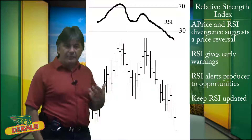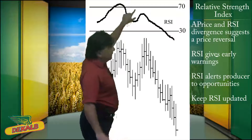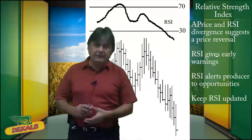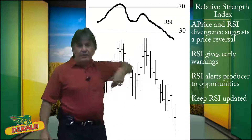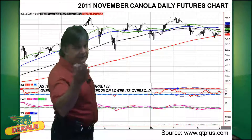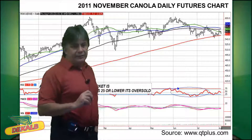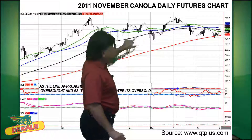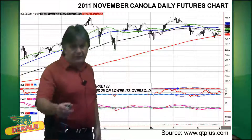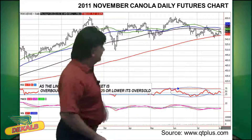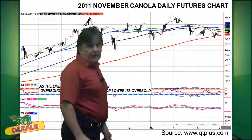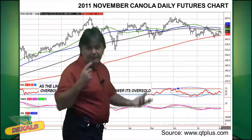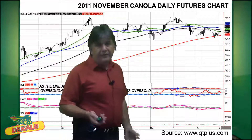When you get to a value of 70, the market is said to be overbought. When you get to 30 or below 30, the market is said to be oversold. Let's give you an example of RSI. This is the 2011 November Canola daily futures chart. You can see at the very bottom where I've circled, the market's peaking. You can see at the very top it's peaking, and all of a sudden the RSI is starting to come down. The market's starting to come down, so it may be giving you an indication that the downside is picking up.